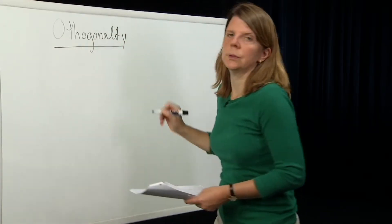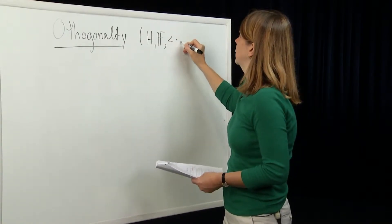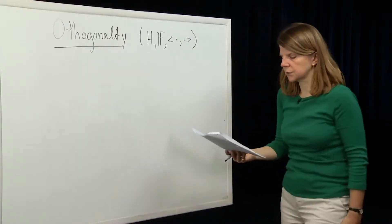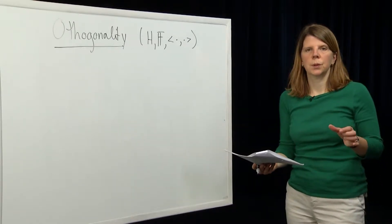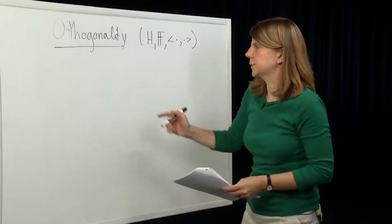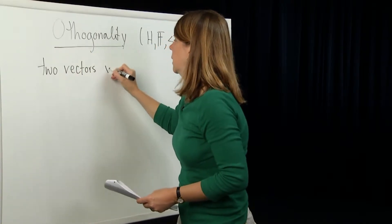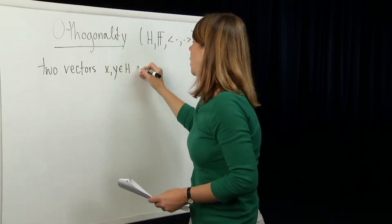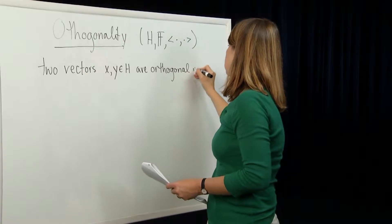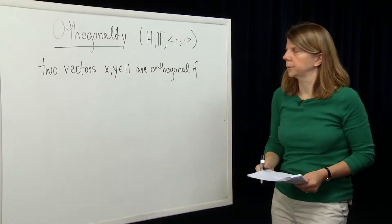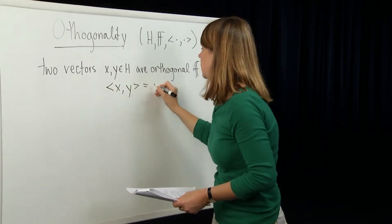We'll start with our Hilbert space H over the field F endowed with an inner product. We define orthogonality first between vectors in H. Two vectors x and y, both in H, are orthogonal if and only if their inner product is equal to zero.